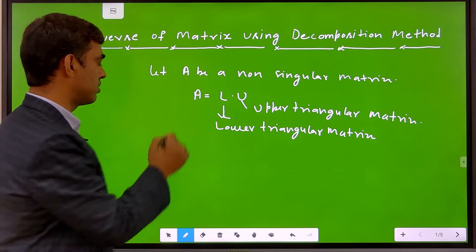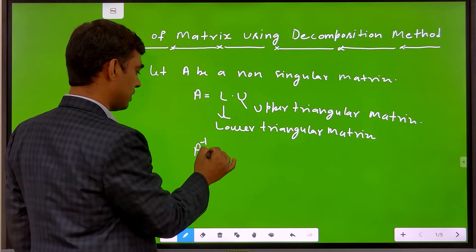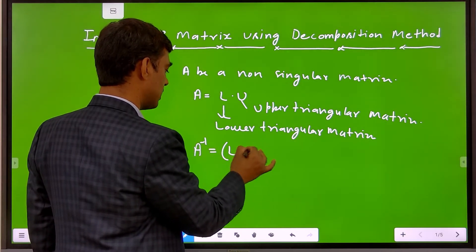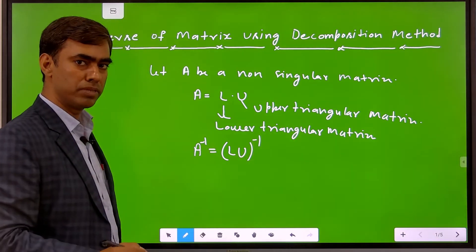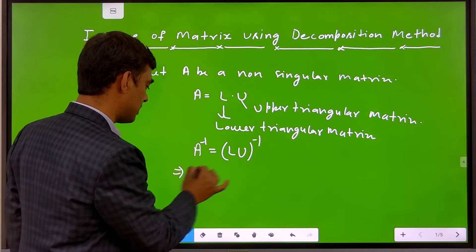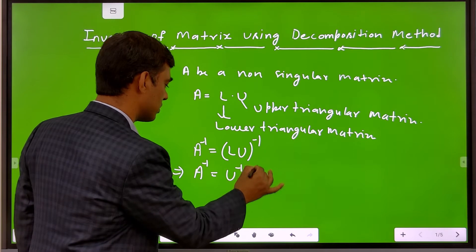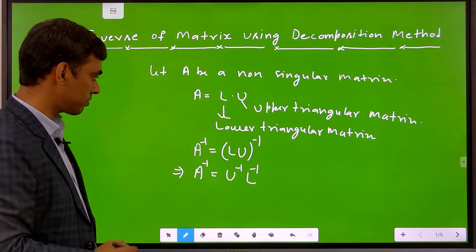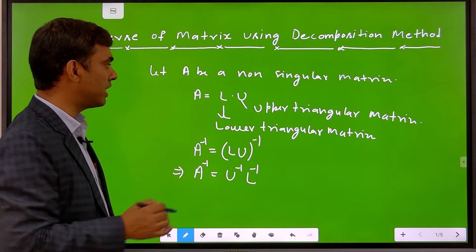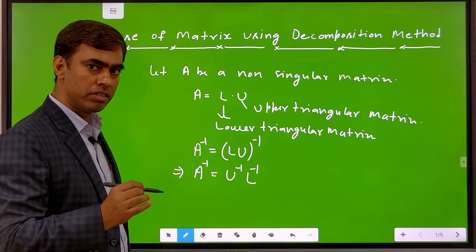To find the inverse of this matrix, we find A-inverse. Taking the inverse on both sides of A = LU, and using the property of the inverse of a matrix, A-inverse becomes U-inverse × L-inverse. So we can decompose the matrix A = LU by three methods.